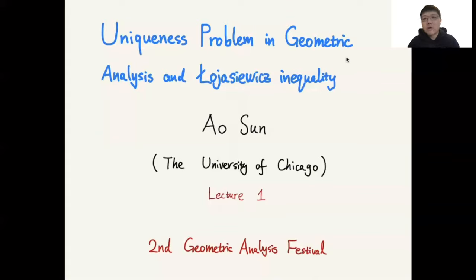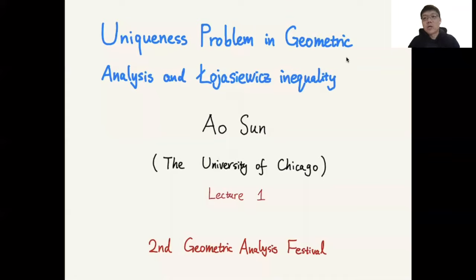In the third part of the talk, I want to discuss an alternative way which is a direct study and proof of the Łojasiewicz inequality for special geometrical objects. In particular, I will discuss a joint work with Jonathan Zhu about how to prove that locally the Clifford self-shrinkers are unique among all the self-shrinkers nearby — self-shrinkers of mean curvature flow. So let's start in the next video.